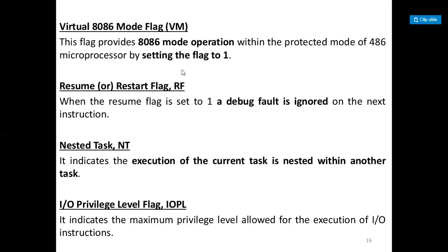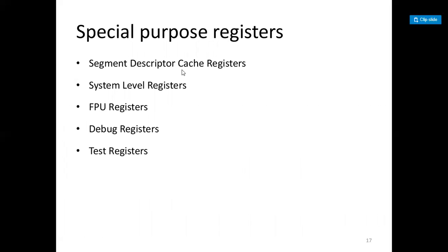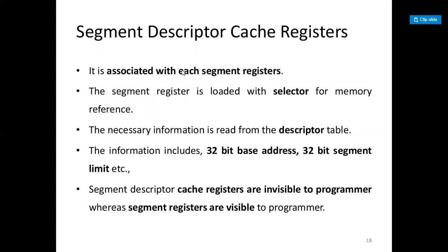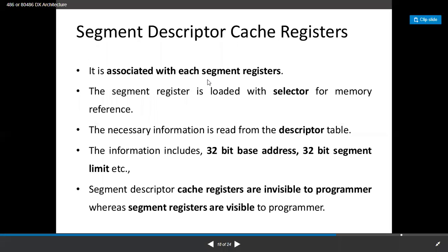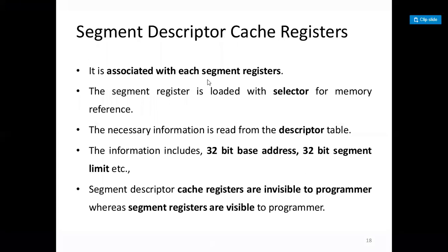If the current privilege level is higher or more trusted than the IOPL, then input/output is executed without any fault; if IOPL is lower than the current privilege level, an interrupt occurs. Special purpose registers include: segment descriptor cache registers, system level registers, FPU (floating point) registers, debug registers, and test registers. The segment descriptor cache register is associated with each segment register and is invisible to the programmer, whereas segment registers are visible.